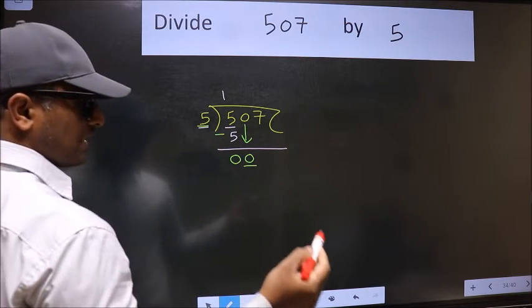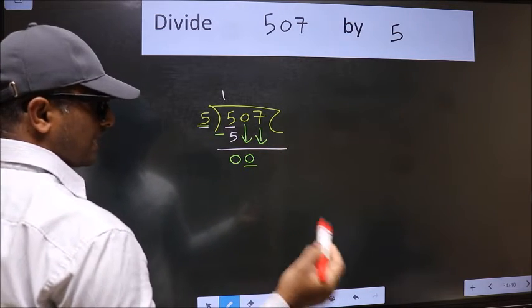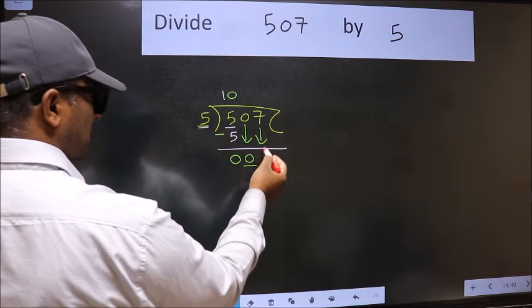So we should bring down the second number. And the rule to bring down the second number is, we should put 0 here. Then only we can bring this number down.